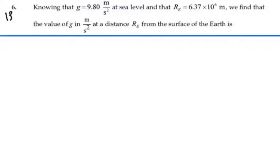Here's problem 13.6. Knowing that g is equal to 9.8 meters per second squared at sea level and that the radius of the earth is 6.37 times 10 to the 6 meters, we find that the value of g in meters per second squared at a distance R_E of the radius of the earth from the surface of the earth is...